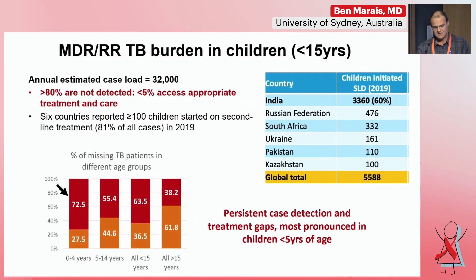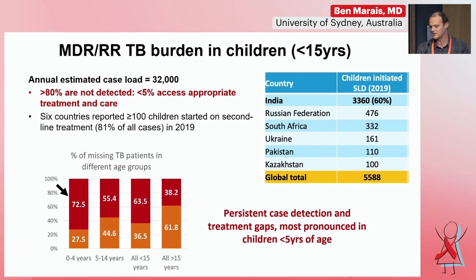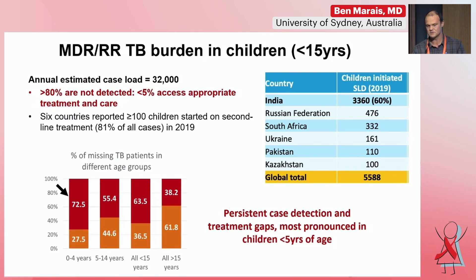Current estimates suggest around 30,000 children develop MDR-TB every year, but more than 80% are not detected and less than 5% are able to access appropriate treatment and care. There are now 80 countries where children with MDR-TB have been treated, but often in very small numbers. The diagnostic dilemma and gap is most pronounced in children under five, and this is true for drug-susceptible but even more so for drug-resistant tuberculosis.